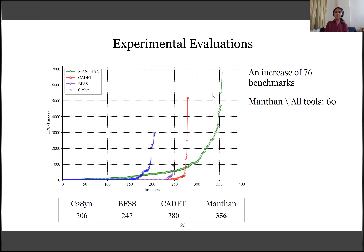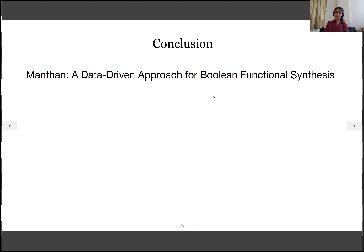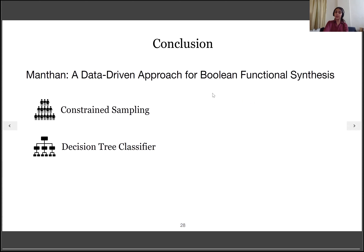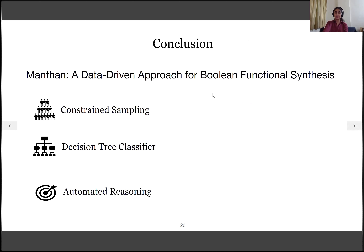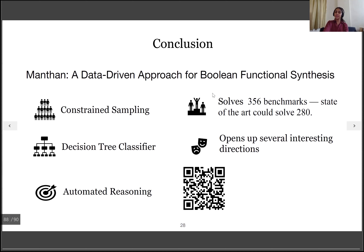Manthan is not only performing well empirically, but it also opens up several directions for future work. We have hypothesized that sampling uniformly at random is not good enough to learn a function from relational data — but what is the ideal distribution? We found that candidate functions learned by the decision tree classifier are good in terms of the required number of repair iterations, but we don't yet have a quantitative measure of candidate goodness. Finally, can we use similar techniques for program synthesis and program repair? To summarize: Manthan is a data-driven approach for Boolean Function Synthesis that uses constraint sampling, decision tree classifiers, and automated repair. It solves 356 benchmarks and opens interesting questions for future work. The tool is available online — please give it a try. Thank you.